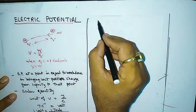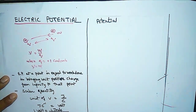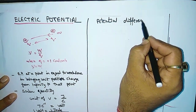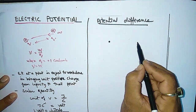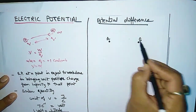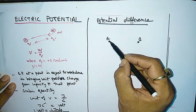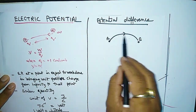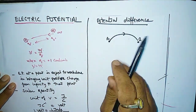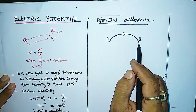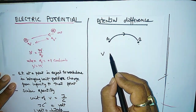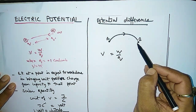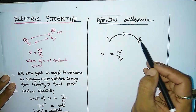Now let's come to the potential difference and understand the difference between electric potential and potential difference. Potential difference is the difference between two points — suppose point A and point B. If we carry a unit positive charge from one point to another, the work done is equal to the potential difference between these two points, using V equals W upon Q.